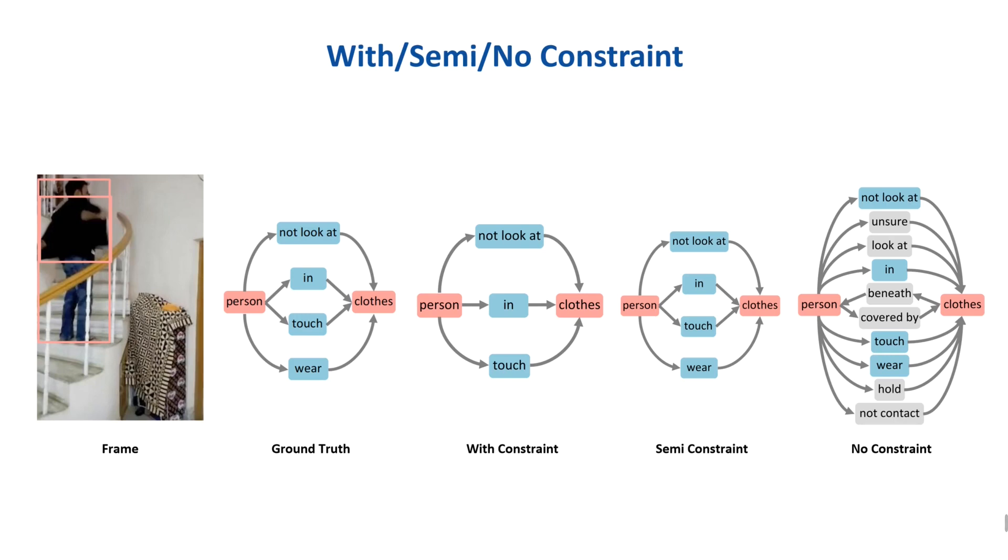With constraint is incompetent for multi-label tasks. When using no constraint, tolerant multi-guesses cause wrong information. To tackle this problem, we propose a new strategy named semi-constraint.